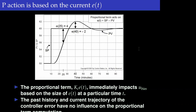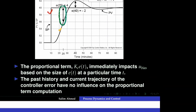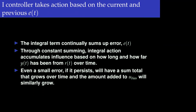The proportional control is based on the current error — the difference between the set point and the output at the current time instant. It does not depend on previous values or the trajectory of the error. For integral action, that's not the case — the integral term continuously sums up the error and accumulates the influence based on how long and how far the output has been from the desired value over time.